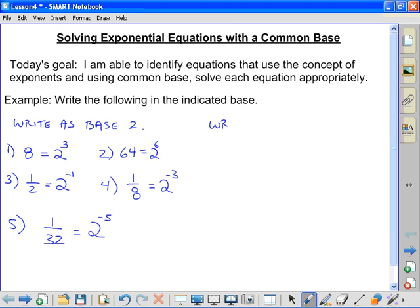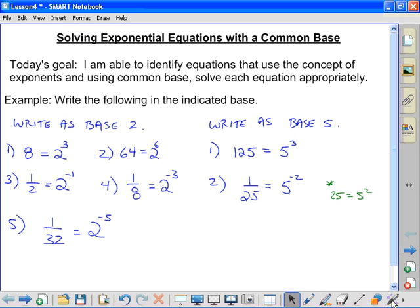You need to be able to do this with multiple bases. So write as base 5. So one twenty-five, you know it's going to be base 5. 5 times 5 is 25, times 5 is 125, so it's 5 cubed. If I have it as a fraction, one twenty-fifth, you know the answer is going to be 5 to some exponent. We know the denominator, 25, is just 5 squared. Because it's in the denominator, moving it to the numerator would change the exponent to negative 2. So you can see why it's important that we're comfortable with our negative exponent laws.